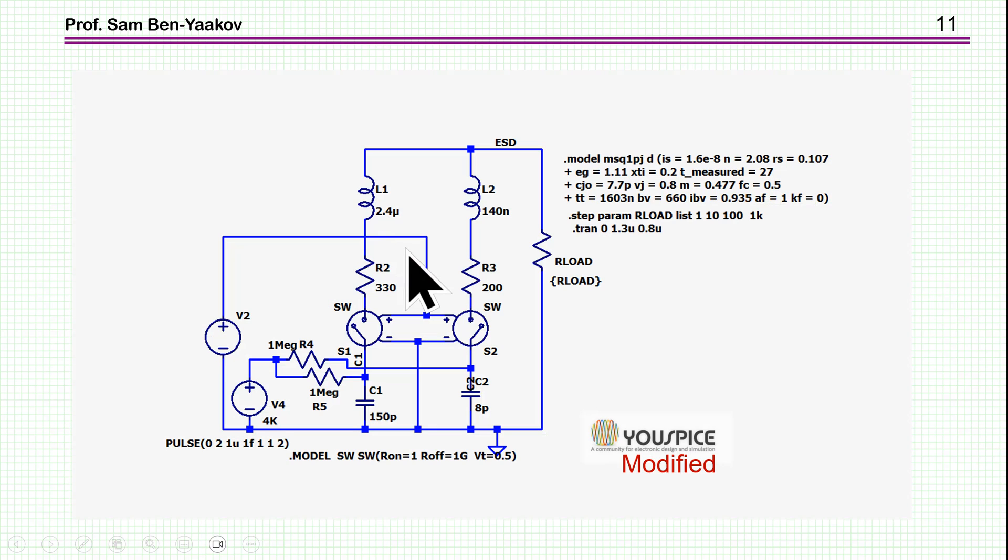So to have a closer look at this whole issue, I've set up an LTSPICE simulation that will generate this ESD pulse. Now, I've taken the basic design from this website. It's modified by me, but it's basically following this circuit that I've seen here in this website. Now, what do we have here? We have two capacitors. This is actually to emulate the waveform of the pulse of the standard.